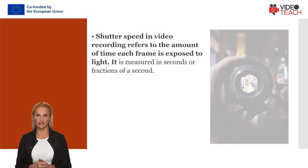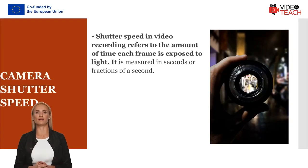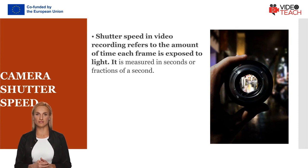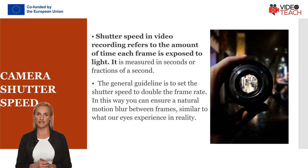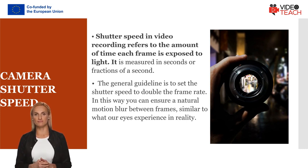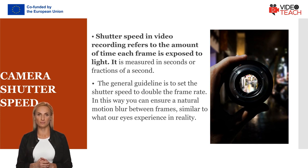Shutter speed in video recording refers to the amount of time each frame is exposed to light. It is measured in seconds or fractions of a second. In video recording, a standard shutter speed is often used. The general guideline is to set the shutter speed to double the frame rate, ensuring a natural motion blur between frames, similar to what our eyes experience in reality.